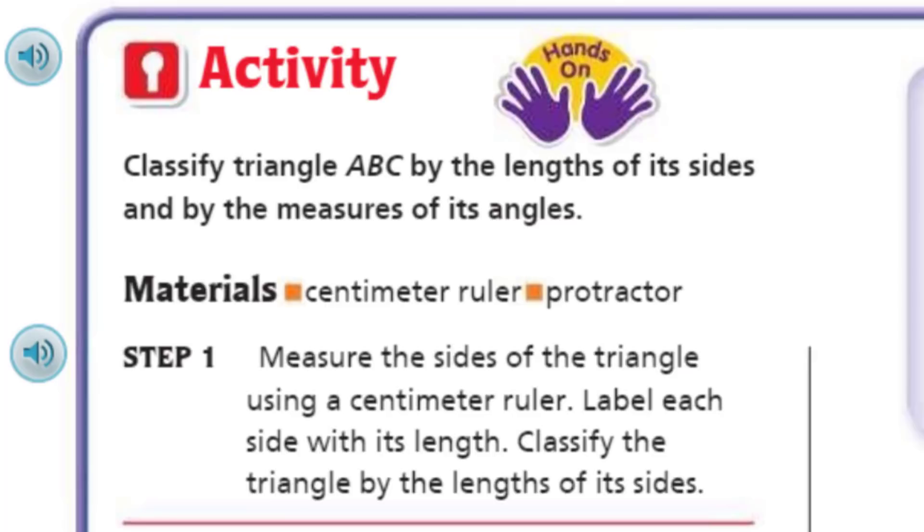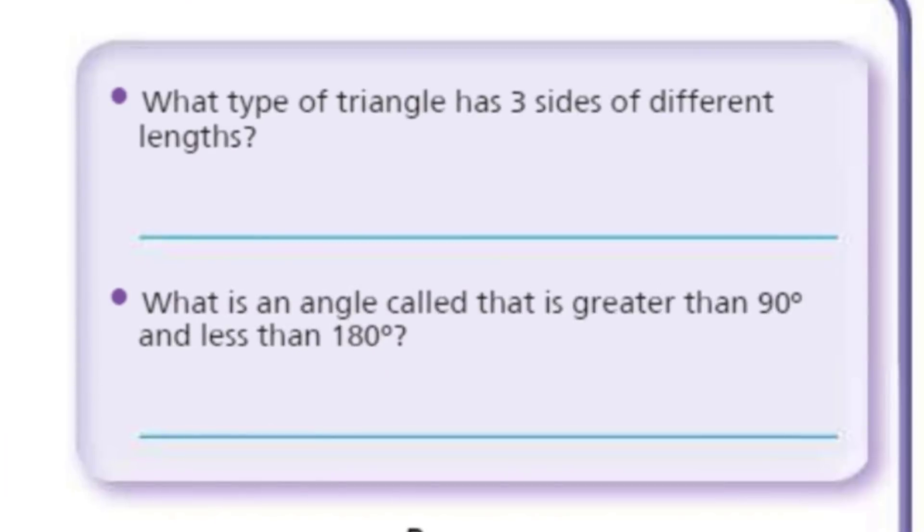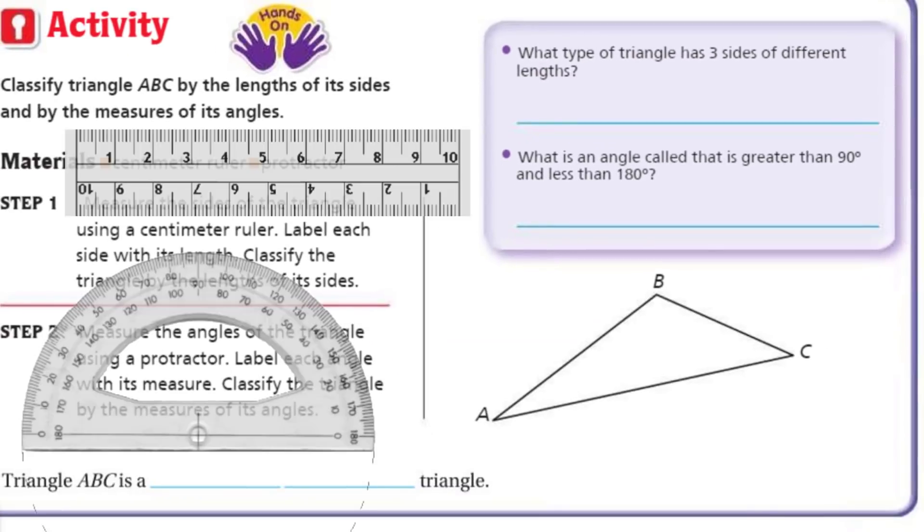Step one. Measure the size of the triangle using a centimeter ruler. Label each side with its length. Classify the triangle by the lengths of its sides. Step two. Measure the angles of the triangle using a protractor. Label each angle with its measure. Classify the triangle by the measures of its angles. This is like pretty heavy here. What type of triangle has three sides of different lengths? What is an angle called that is greater than 90 degrees and less than 180? Well, let me see if I can get some equipment here. I'll be back. Hey, look. I'm back. That's called editing.